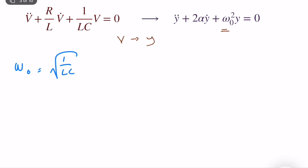The resonant frequency omega_naught is the same for both parallel and series RLC circuits, which is good. However, alpha will be different. For the series RLC circuit, alpha equals R divided by 2L — completely different from the parallel case.